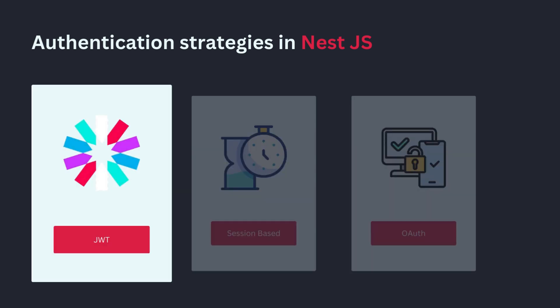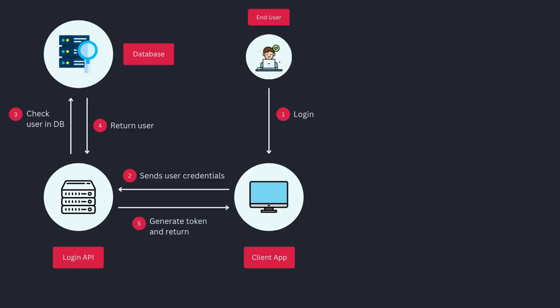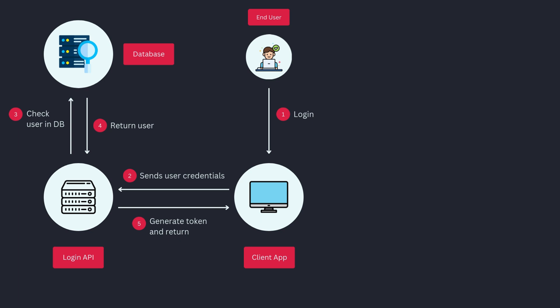JWT, or JSON Web Token, is like a digital ID card issued by the server. When you log in, the server verifies your credentials and hands you a token — your all-access pass to the application. For every subsequent request, you show this pass to prove your identity. First, the client sends user credentials to the server. The server validates the credentials, generates a token, and sends it back. The client stores the token in local storage and includes it in the auth header of each request. The server then validates this token before allowing access to protected routes.